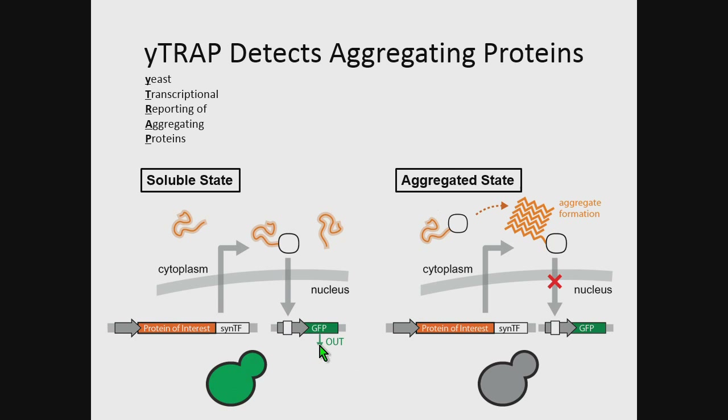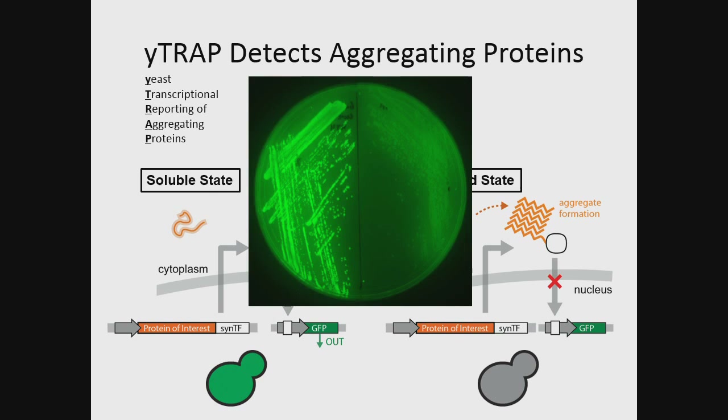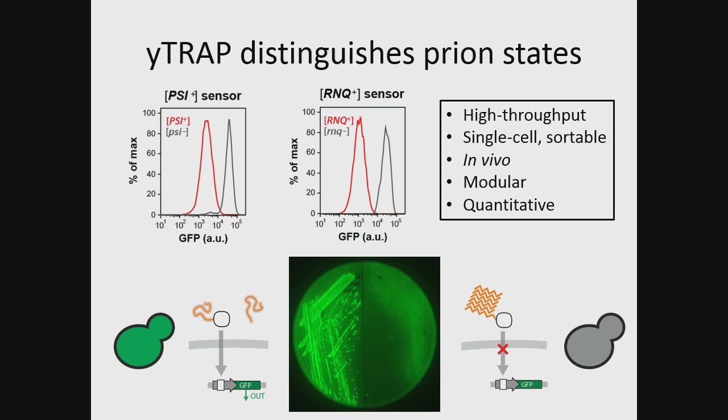We express this protein-of-interest fusion at a very low constitutive level so that we can probe its interaction with the endogenous cellular proteins. If endogenous cellular proteins are soluble, we get high activity of the transcription factor — it's free to go and activate transcription of GFP. On the other hand, if the endogenous proteins are aggregated, our fusion protein is sequestered into the aggregate and we get a dark cell. We can take a simple fluorescent picture of a yeast agar plate and identify colonies where the protein is either soluble or aggregated.